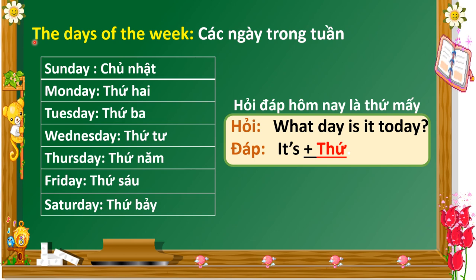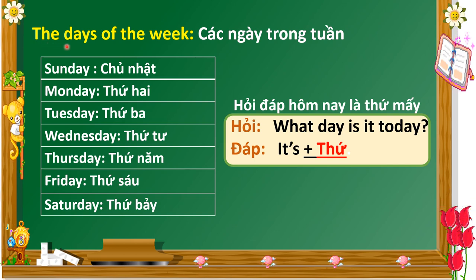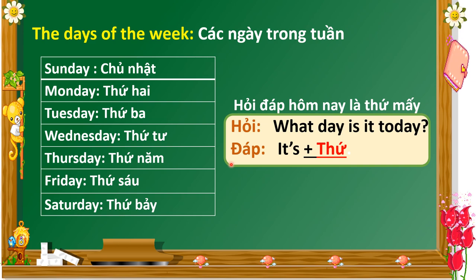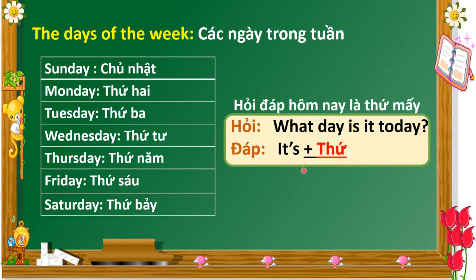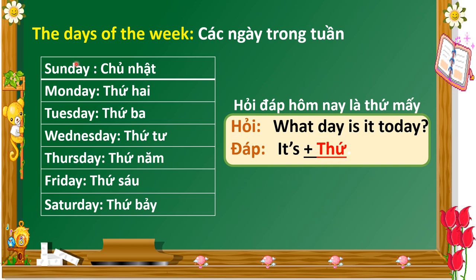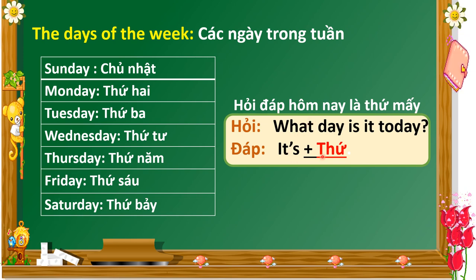Phần này các con ghi vào vở cho cô: các ngày trong tuần — the days of the week. Chúng ta ghi mẫu câu hỏi đáp hôm nay là thứ mấy: What day is it today? Khi trả lời, các con nhớ là sau 'is' chúng ta thêm vào thứ trong tuần — thế thứ đó vào vị trí sau 'is'.